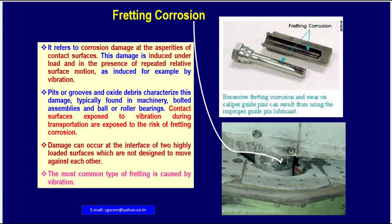Fretting corrosion refers to corrosion damage at the asperities of contact surfaces. This damage is induced under a load and in the presence of repeated relative surface motion, as induced by vibration. Pits or grooves and oxide debris characterize this damage, typically found in machinery, bolt-and-nut assemblies, and ball or roller bearings.